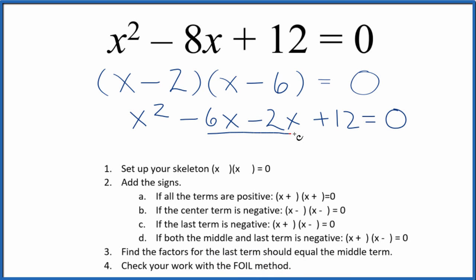and we can combine these two terms here, negative 6x and negative 2x, that's negative 8x. X squared minus 8x plus 12 equals 0. That's what we got up here. So we know we did this correctly.